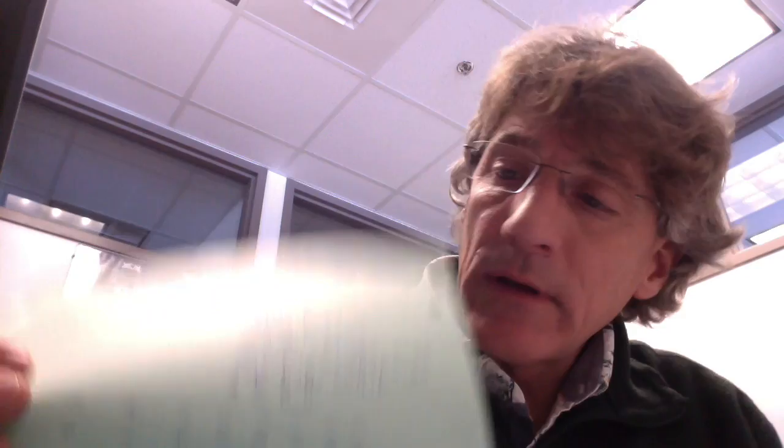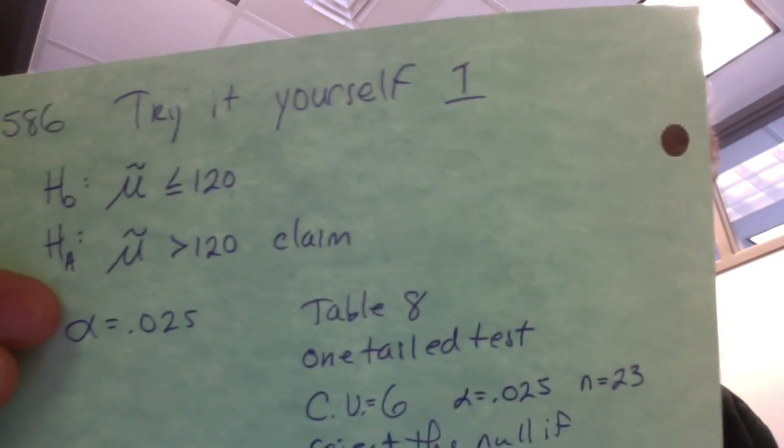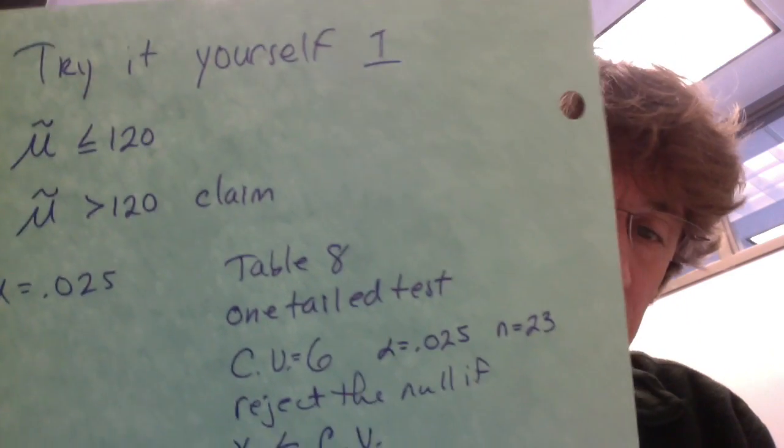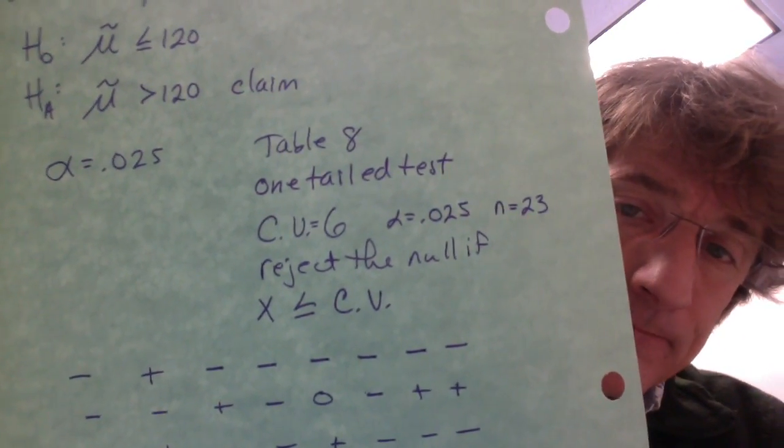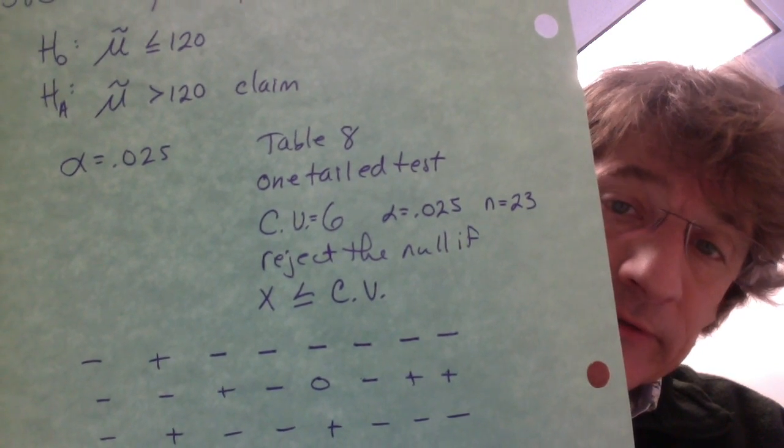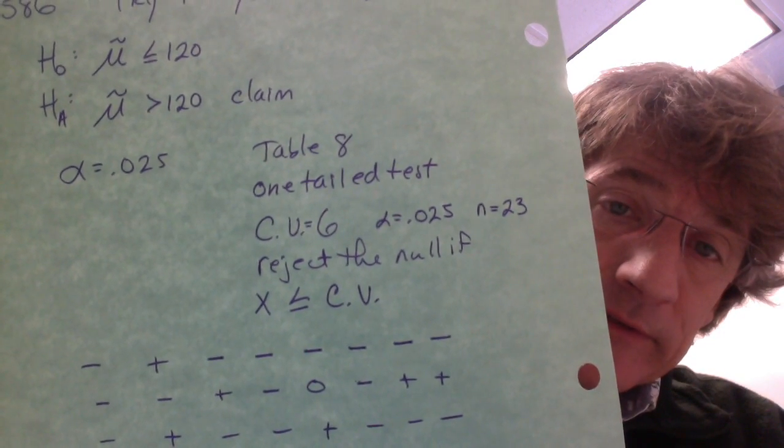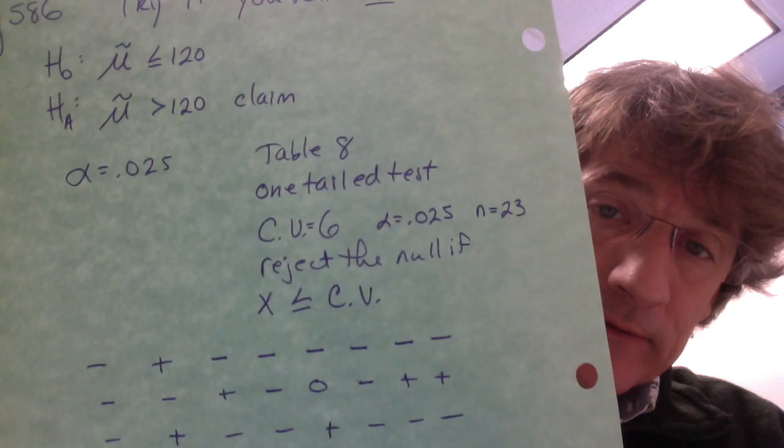Our alpha is 0.025, and when you look at the table, you're looking at table 8. It's a one-tailed test. The reason that it's a one-tailed test is because it's a greater than symbol. If it was a less than symbol in the alternative, it would also be a one-tailed test.